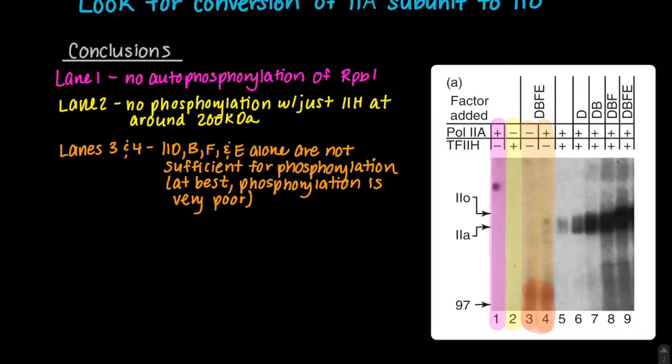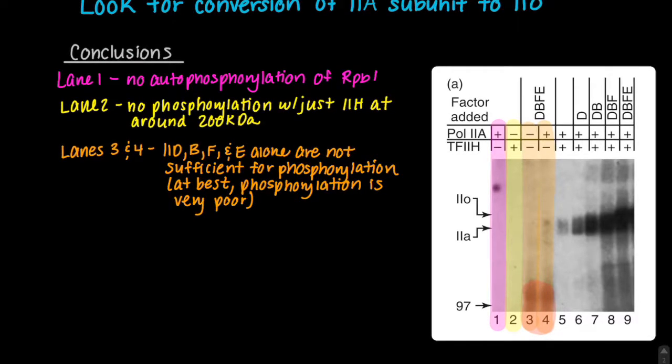Additionally, at the bottom of the gel highlighted in red, there are some dark bands present. While we are unsure exactly what these bands are, it is apparent that some other product is being phosphorylated at this position. Since these bands are not near the expected size of RPB1, we do not have to worry too much about them.